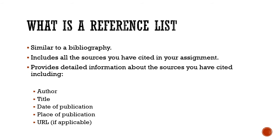A reference page differs from a bibliography in that on a bibliography you might include all of the books or sources you consulted on the topic. In a reference page, however, you will only include the sources that you have cited in the assignment. The reference list provides detailed information about all of the sources you have cited, including information such as the author, the title, the date of publication, the place of publication, and the URL if applicable. Basically, it is all the information someone would need to find the source themselves.